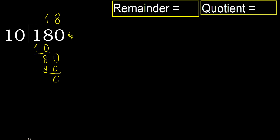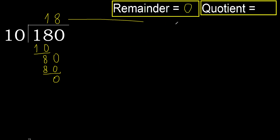Next, that is not a number, therefore finish it. 180 divided by 10 is 18. Ok.